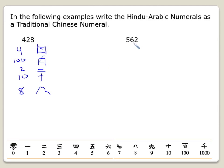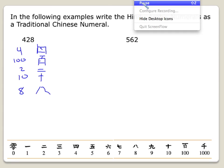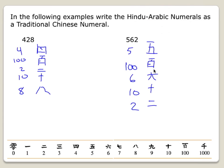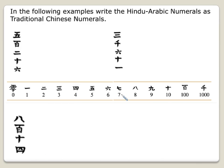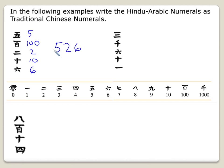Try 562 on your own — pause the video and come back to check your work. Welcome back. So we have 500, 60, and 2. Now we want to translate Chinese numerals into Hindu-Arabic. Looking at this number: that's 4 times 100, then 2 times 10, then 6. Combining it all together, we get 526.